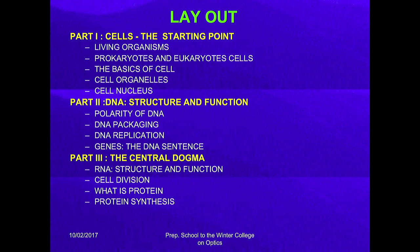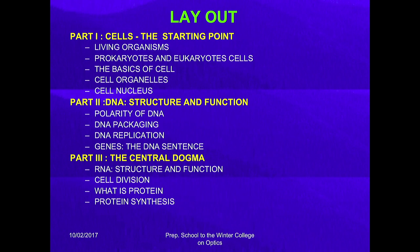Brief introduction: What are living organisms? Two kinds of living cells — prokaryotes and eukaryotes. The basis of the cell, basic components of the cell, its nucleus. Specified structures called organelles, and then the cell nucleus. I will give a brief introduction of DNA structure and its function. Then we will cover what protein is, because we might need this for green fluorescence protein.